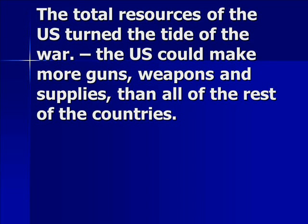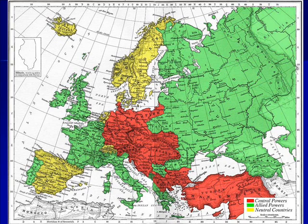Once the United States started cranking out weapons, guns, supplies, and food, that turned the tide — it changed everything. The United States could make more guns, more weapons, more supplies than all of the rest of the countries combined. For every plane the Germans shot down, the United States could make ten more. For every ship the Germans sank, the United States could make a hundred more — making them faster than the Germans could destroy them, which means the United States and the Allies were going to win. The only question was whether the United States was going to get there in time.